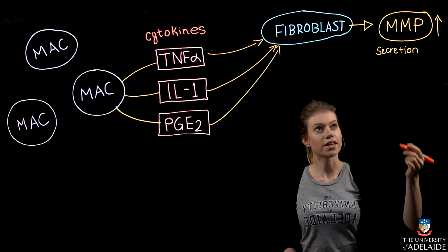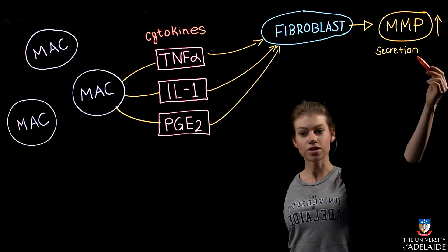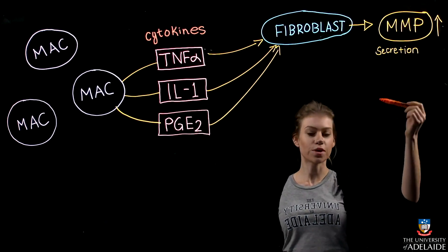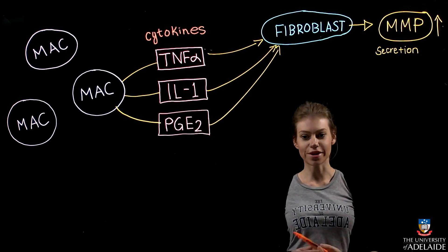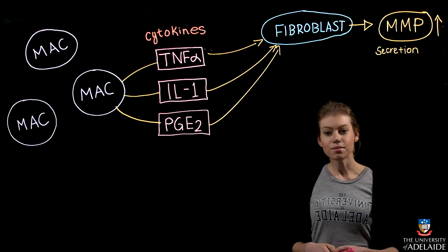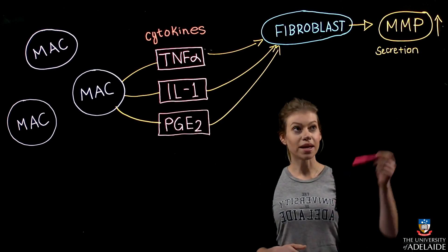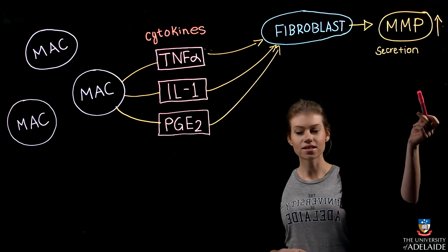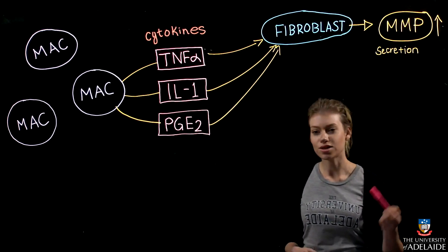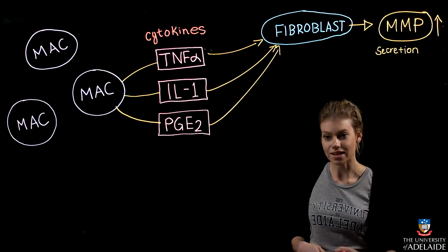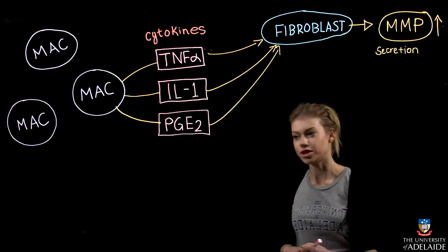These MMPs break down the collagen matrix, as discussed in the last video. At the same time that MMPs are being released, PGE2 directly leads to bone resorption.